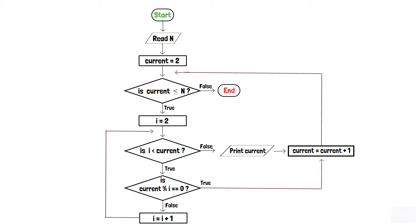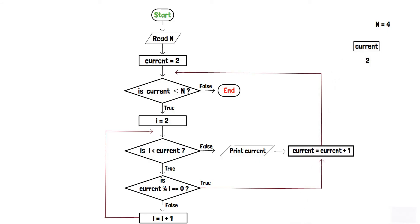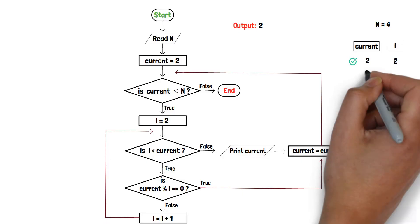To deeply analyze the flowchart, let's do a dry run. Consider n equals 4. At first, the value of current is 2. Since 2 is less than or equal to 4, the condition in the first decision box is true. Since the condition is true, i is also initialized with 2. Here, 2 is not less than 2, therefore the condition in the second decision box is false. Hence, current, which is 2, is printed. Current is then incremented to 3.